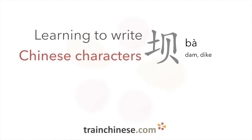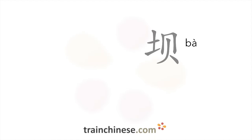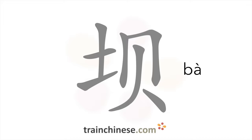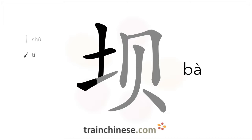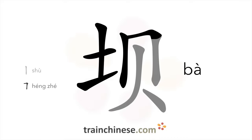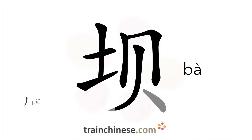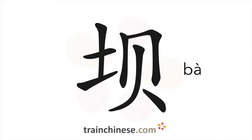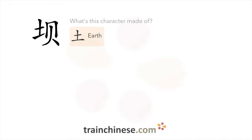Let's take a look at this character. It's written with seven strokes. Let's look at what goes into this character. The Earth radical appears in this character.